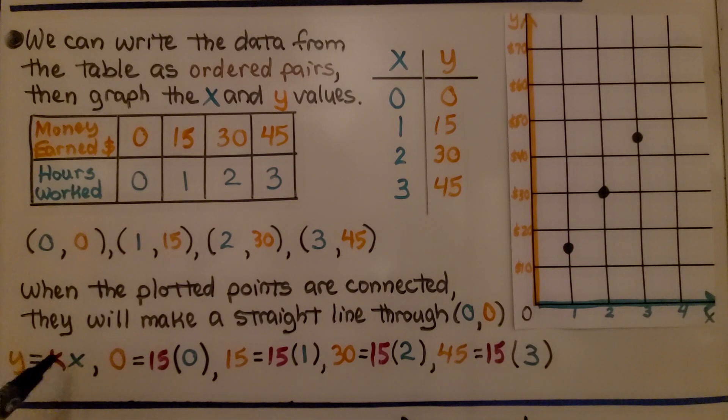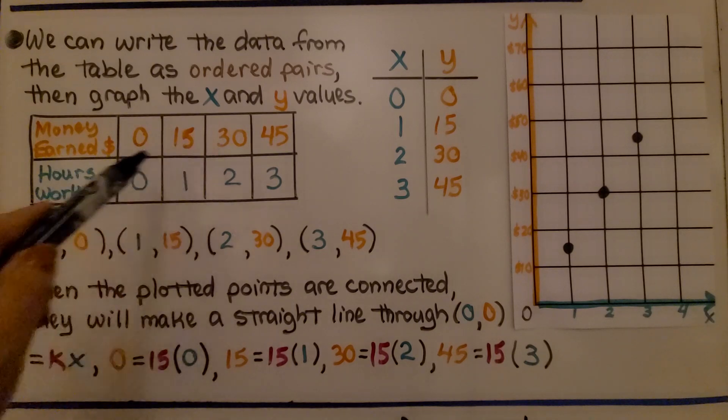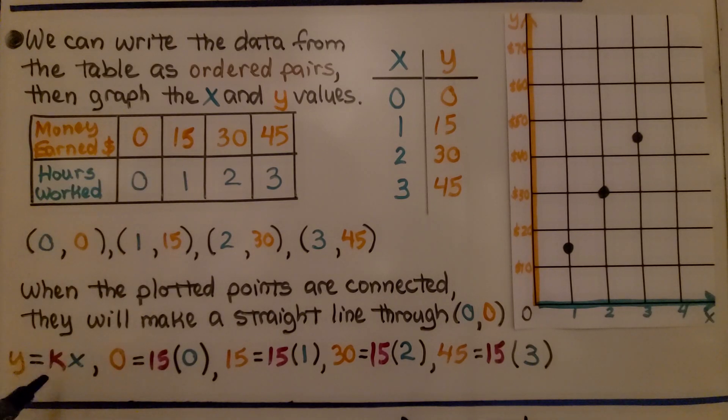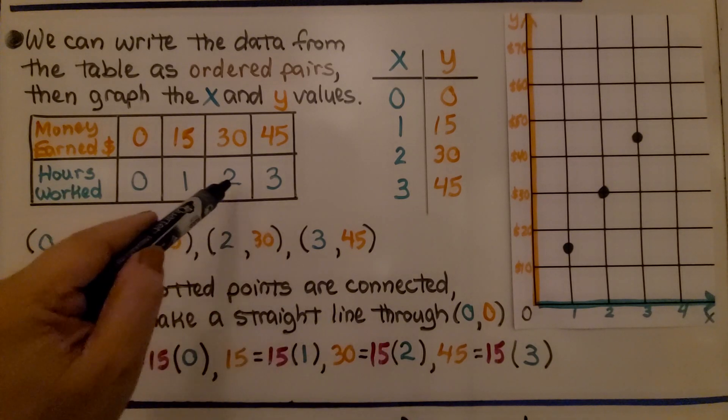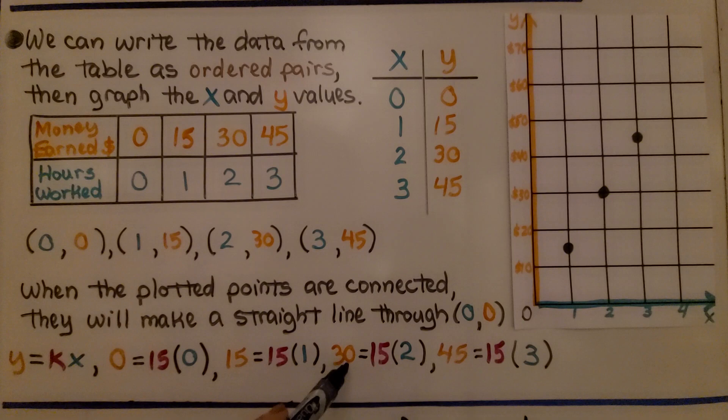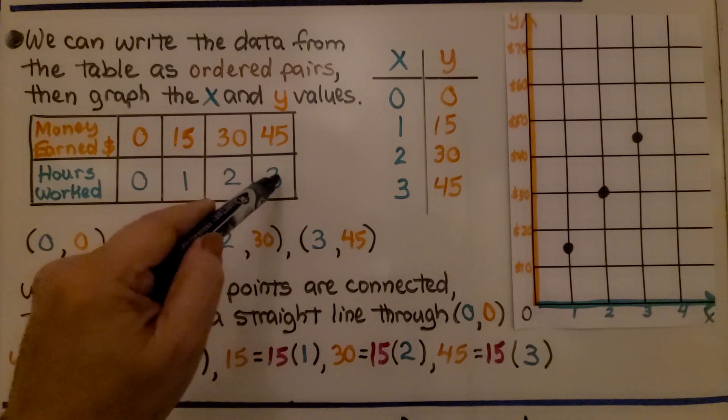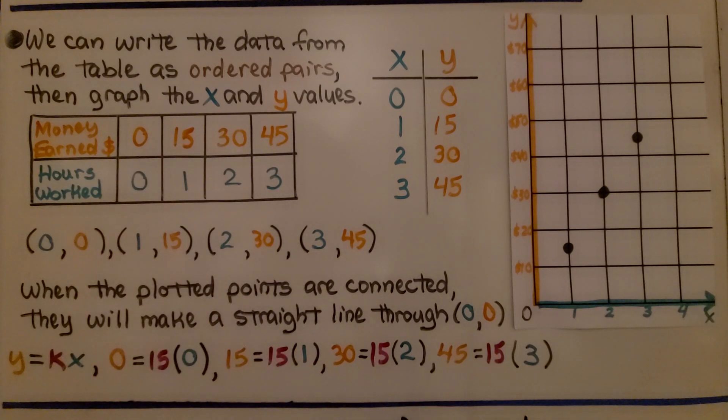Using y=kx, k, the constant of proportionality, is 15. If we have zero and multiply it by 15, it will equal zero. If we have one and multiply it by 15, it will be 15. If we have two and multiply it by 15, we'll have 30. And if we have three and multiply it by 15, we'll have 45. So the rate of change is constant. It's always 15, so this is proportional.